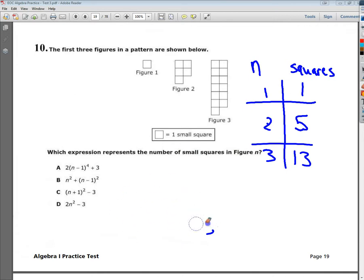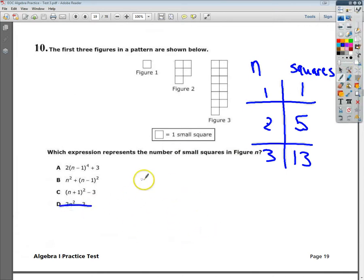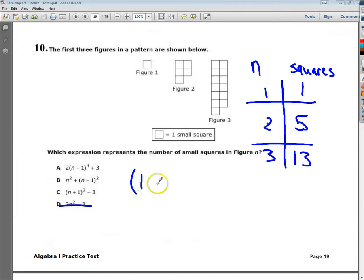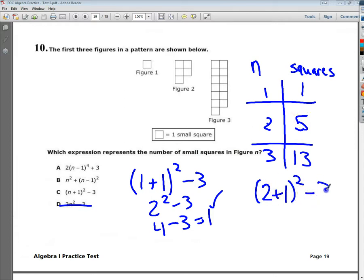From there, I'm going to go to C, just because it's the next one up, and I'm going to try the same exact thing. My n value for my first one will be 1, and I should get a 1 as my result. 1 plus 1 is 2, so it would be 2 squared minus 3, or 4 minus 3, which is 1. So things are looking good. The next one, I would do 2 plus 1, plugging in 2. I'm hopeful that I pop out a 5 here. So 2 plus 1 is 3, so 3 squared minus 3. 3 squared is 9, and 9 minus 3 is 6. So unfortunately, this one is out as well.